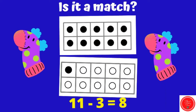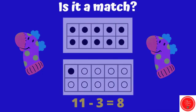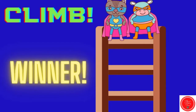Almost there. 11 minus 3 equals 8. So we're starting with 11, we need to take away 3: 1, 2, 3. Let's see how many are left: 1, 2, 3, 4, 5, 6, 7, 8. This is a match. Nice job — you made it to the top.